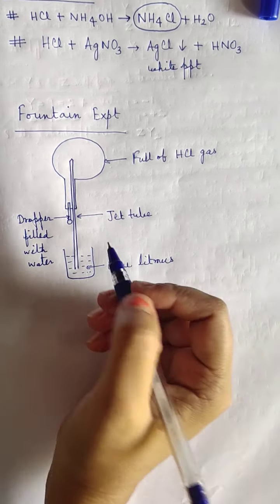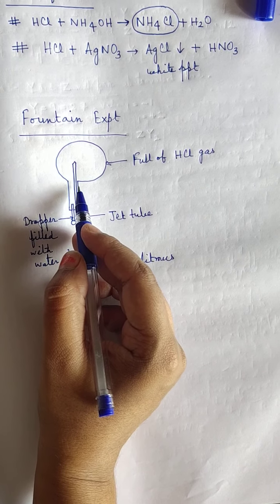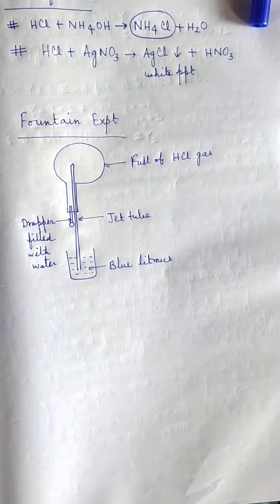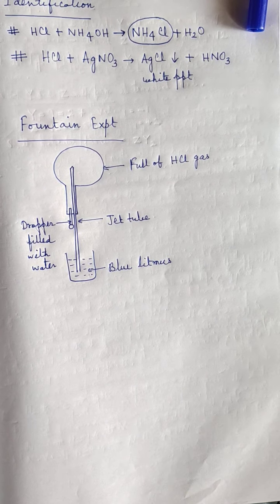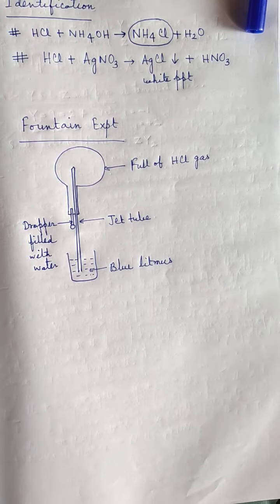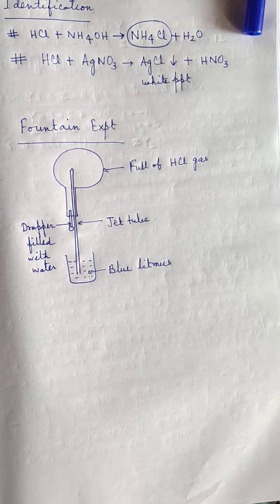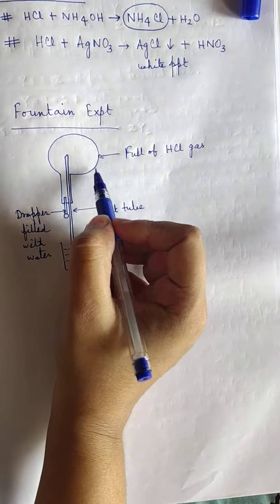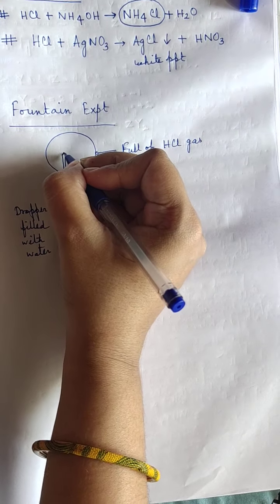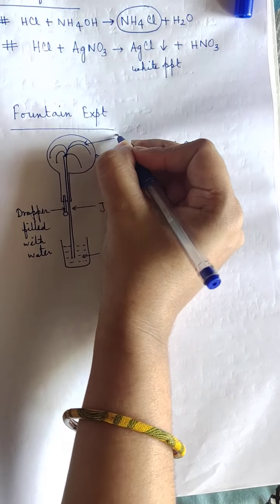When we press the dropper, all the water inside goes into the flask. HCl gas being highly soluble in water, the maximum amount of gas that can dissolve in the given amount of water dissolves, producing a saturated solution. As a large amount of gas dissolves, the pressure inside the round bottom flask drops suddenly. To equalize the pressure, the blue litmus solution is forcefully drawn in through the jet tube as a fountain.